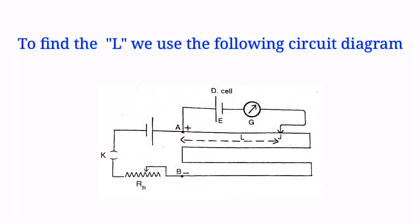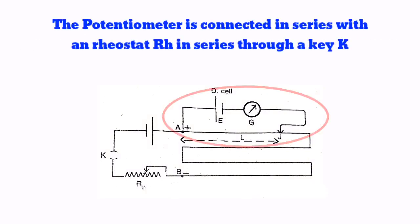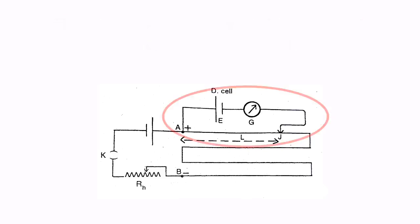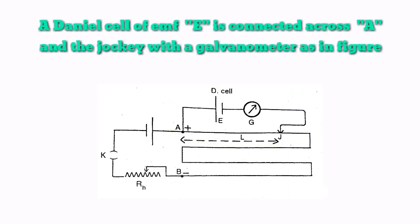To find the L, we use the following circuit diagram. The potentiometer is connected in series with a rheostat RH in series through a key K. A Daniel cell of EMF E is connected across A and the jockey with a galvanometer as in figure.